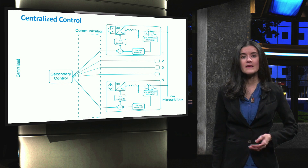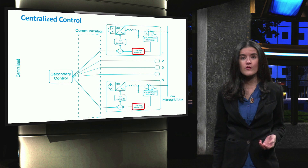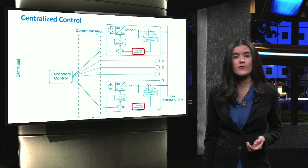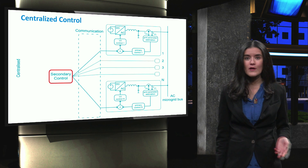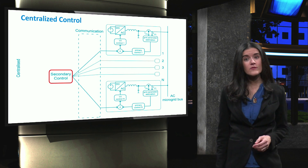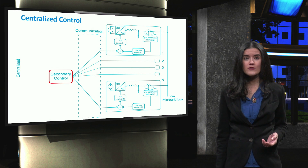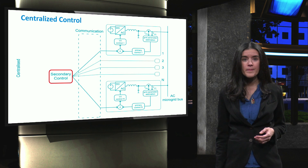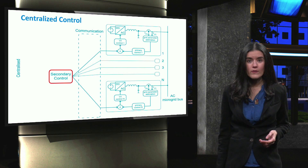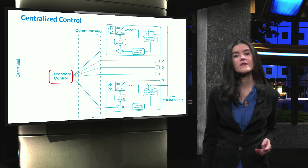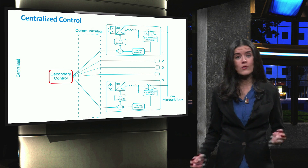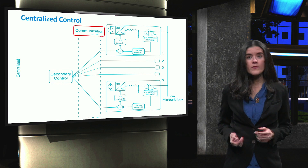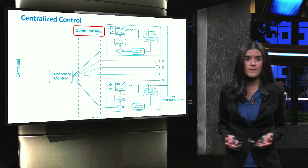In a centralized scheme, the primary control or local control is implemented in a local way, whereas the secondary control or internal microgrid control is implemented in a centralized manner. The microgrid central controller is in charge of collecting the operation data of the distributed generation units, for example data about the active and reactive power. Then, it sends updated active and reactive power setpoints to all local controllers through the communication link — that is, to the controllers of the distributed generators and the energy storage units.